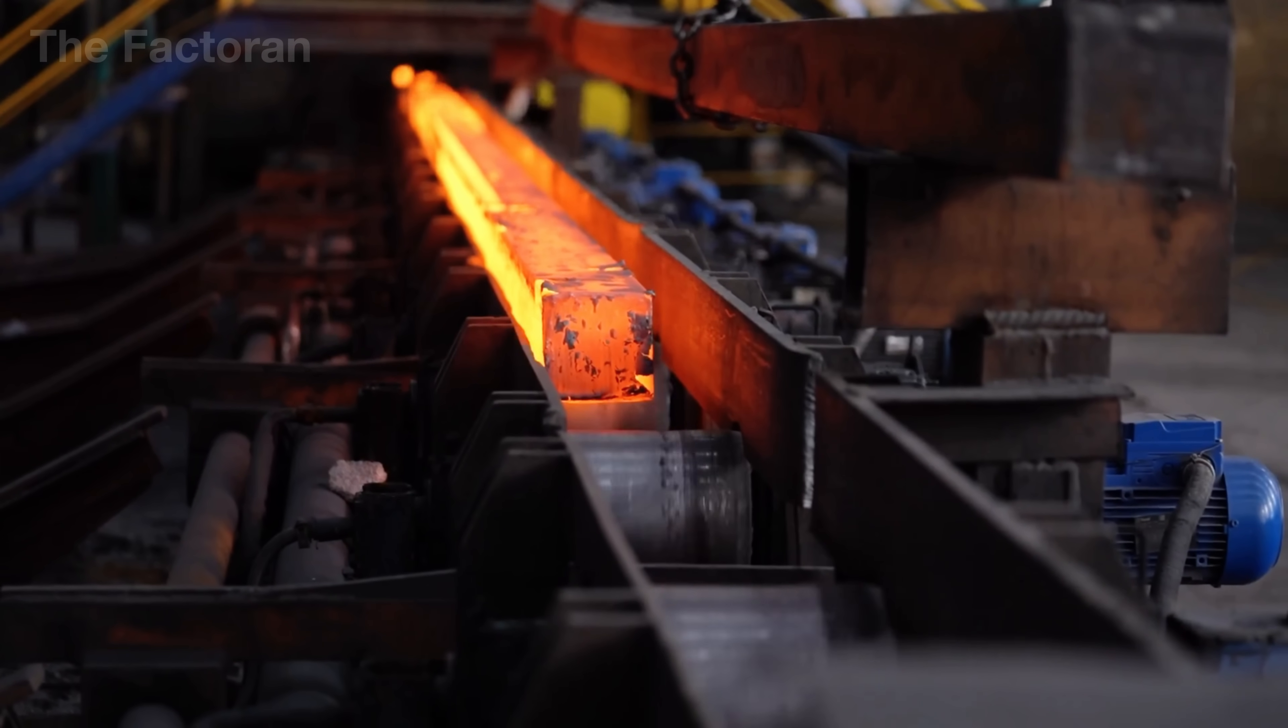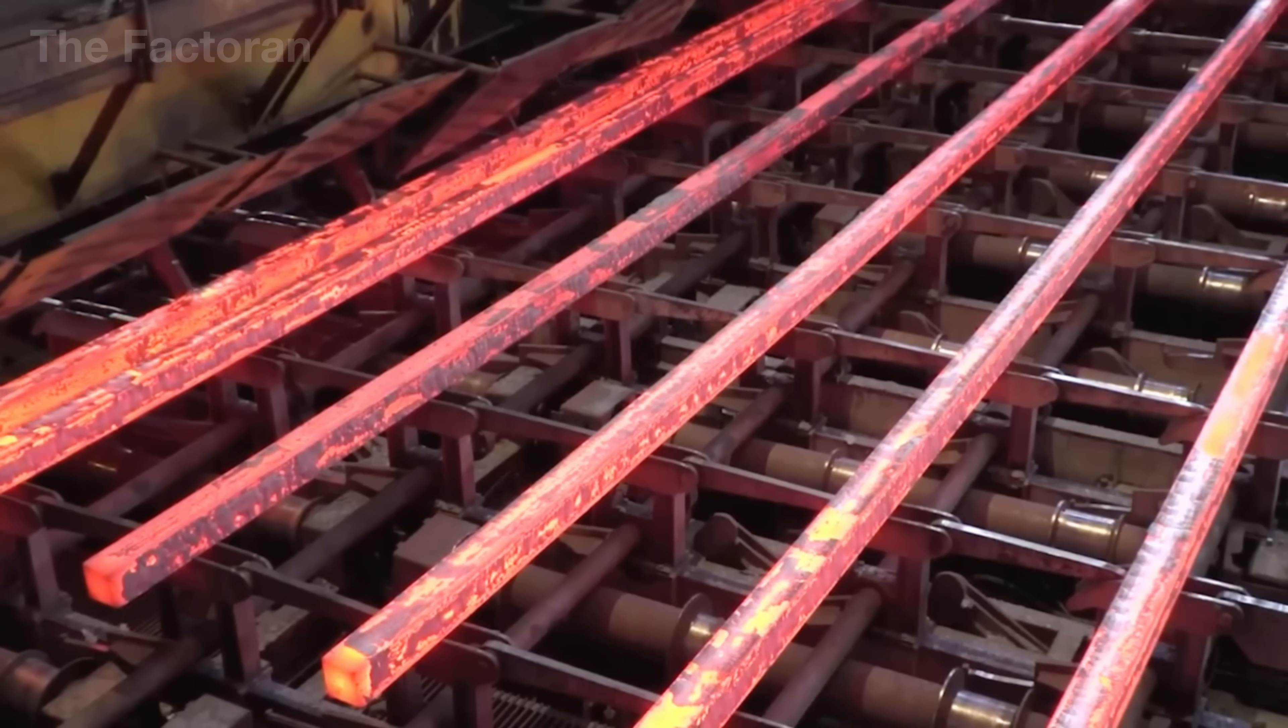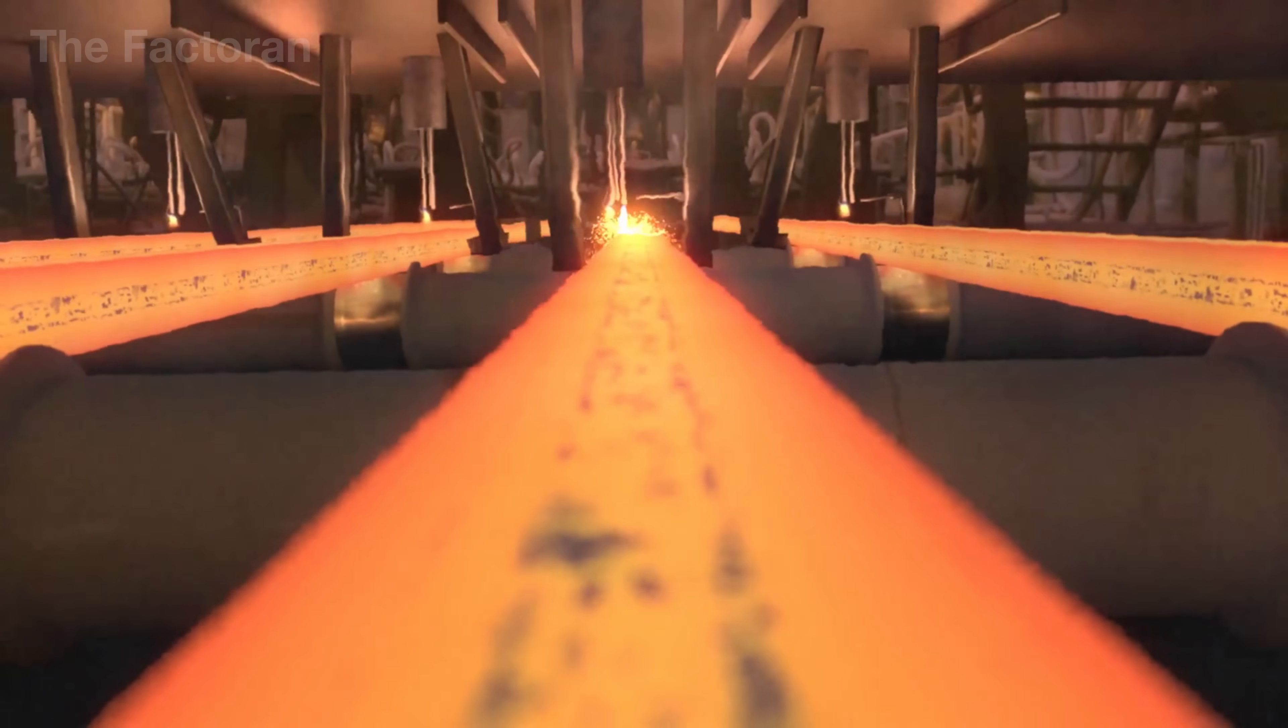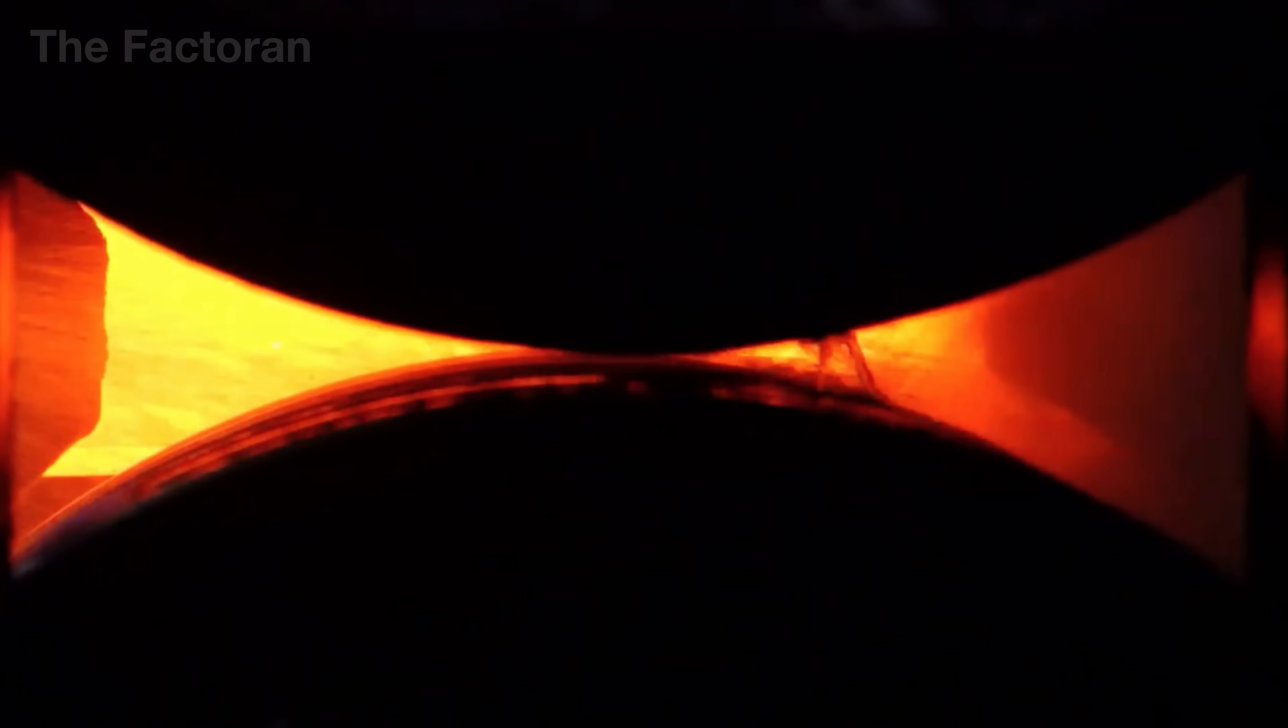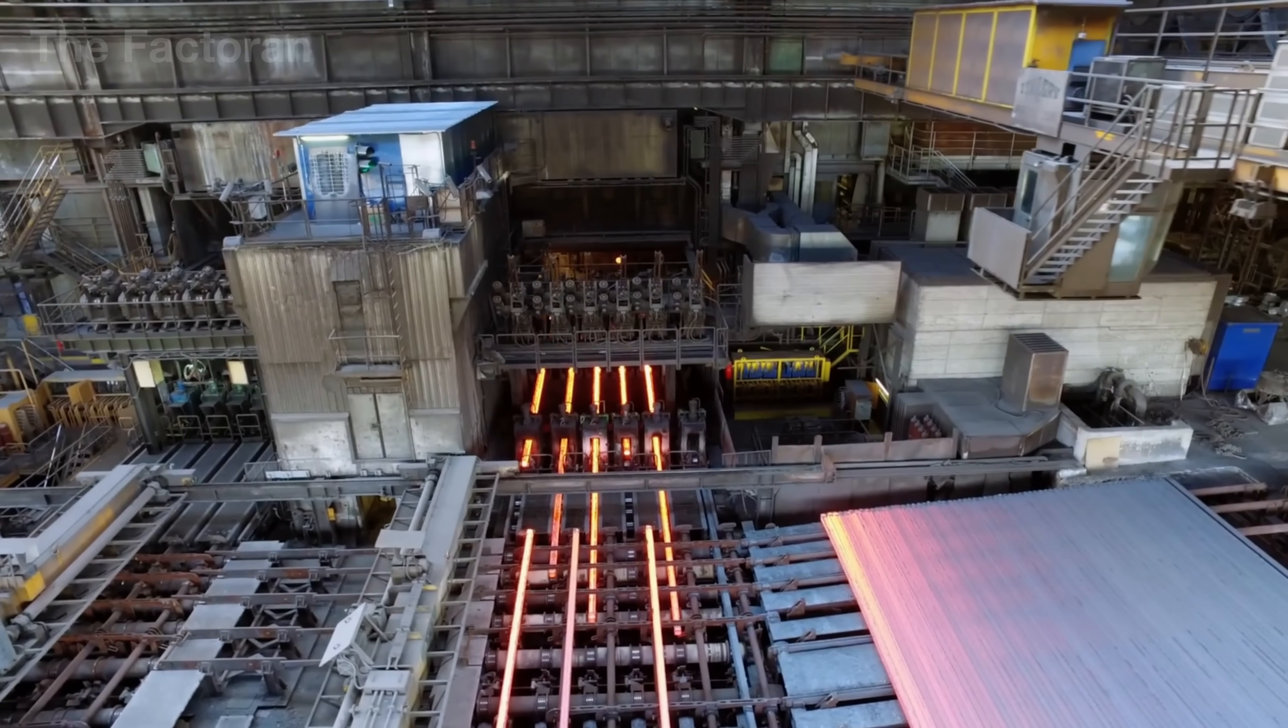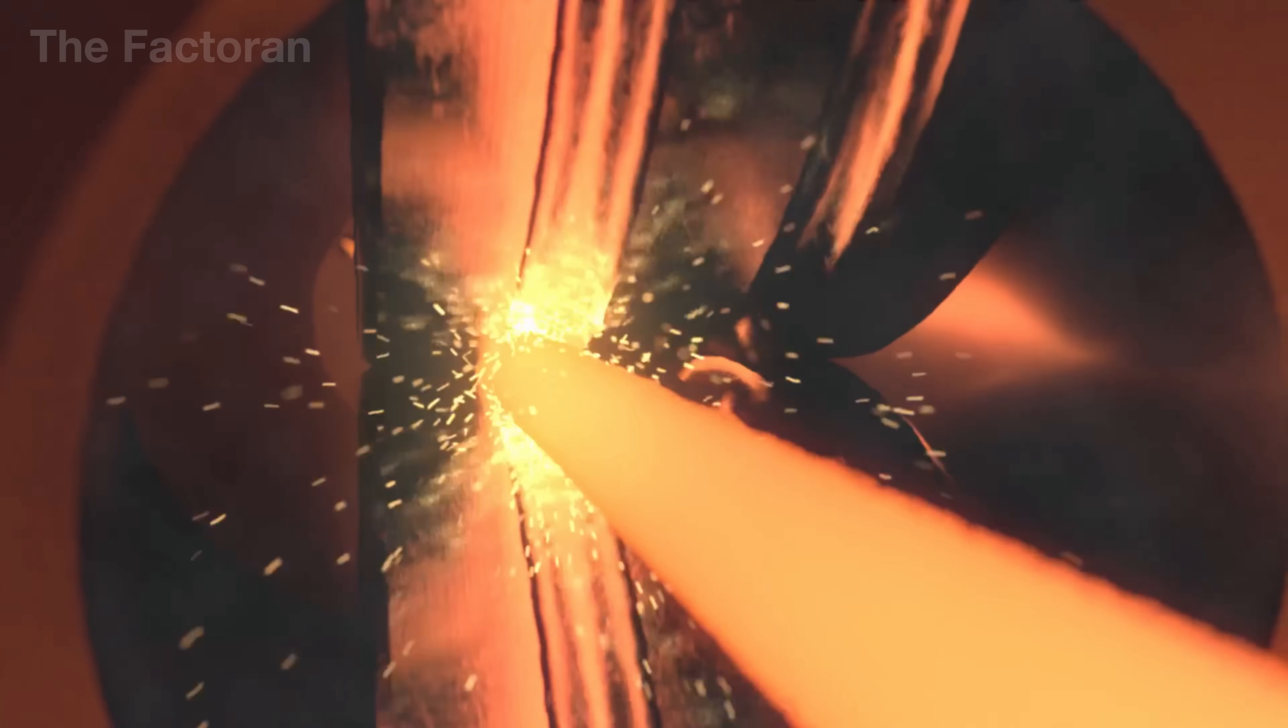Immediately after leaving the mold, the billets are still at thousands of degrees and are sent directly to the primary rolling mill to take advantage of the retained heat. Here, massive alloy steel rollers, each up to several meters in diameter, rotate continuously, applying immense pressure on the billet. With each pass between the rollers, the billet is flattened and elongated, its thickness reduced while its length increases. This process repeats across multiple rolling stands, gradually transforming the billet into smaller semi-finished shapes such as round bars, flat strips or long slabs.